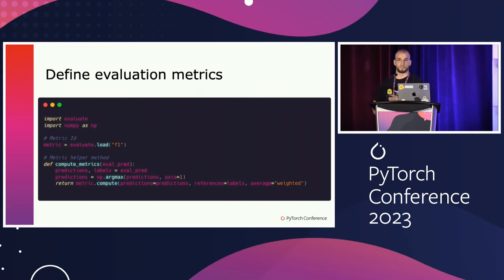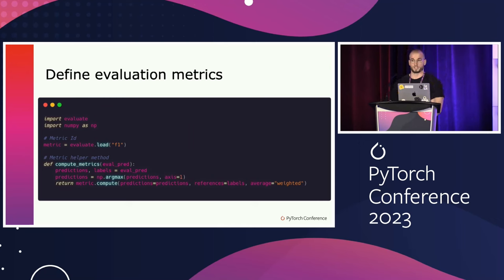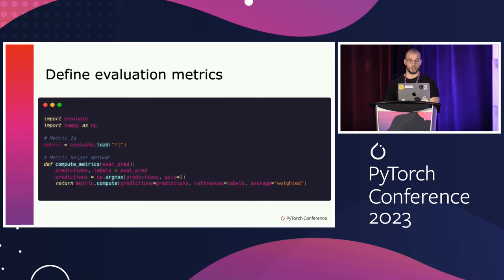When training machine learning models, evaluation is critical to know if our model is performing well. We use the Evaluate library from HuggingFace, which implements many default evaluation metrics. Here we use the F1 metric, which is common for text classification, and define a helper method that receives predicted labels from our model and computes the F1 score. We will use this metric during training to evaluate our model after each epoch.